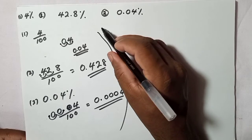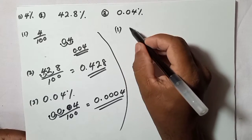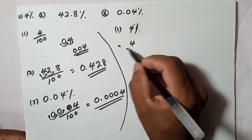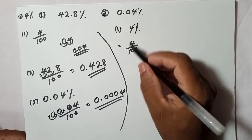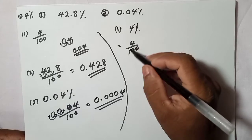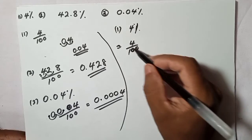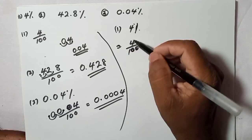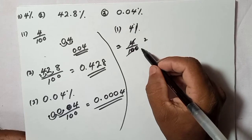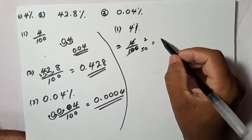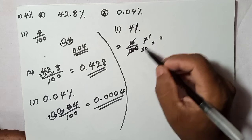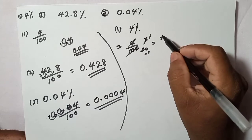For 4% as a fraction: 4% means 4 over 100. This is already a fraction, but we simplify it. Divide both numerator and denominator by 2 to get 2 over 50, then divide by 2 again to get 1 over 25. So 4% = 1/25.